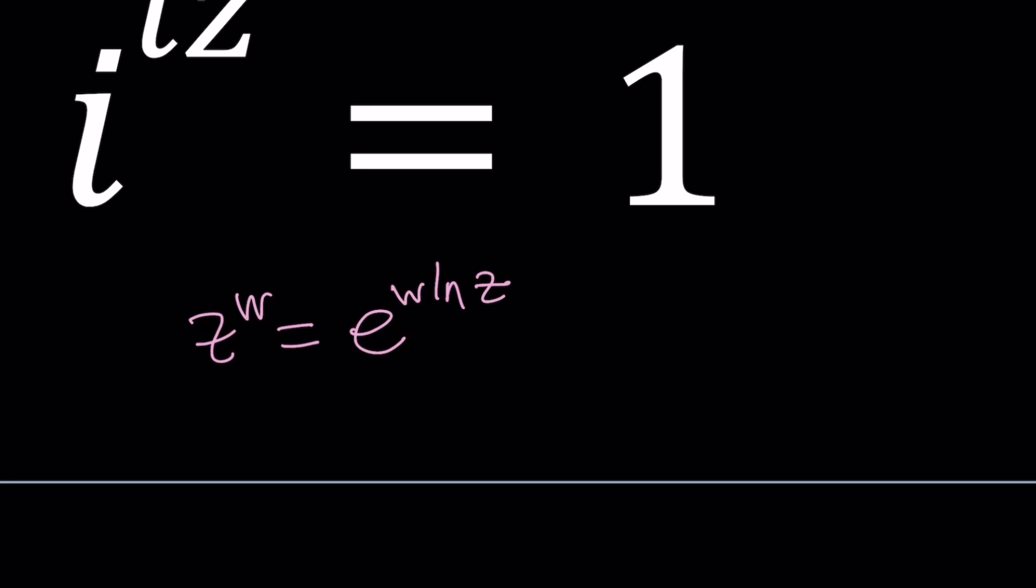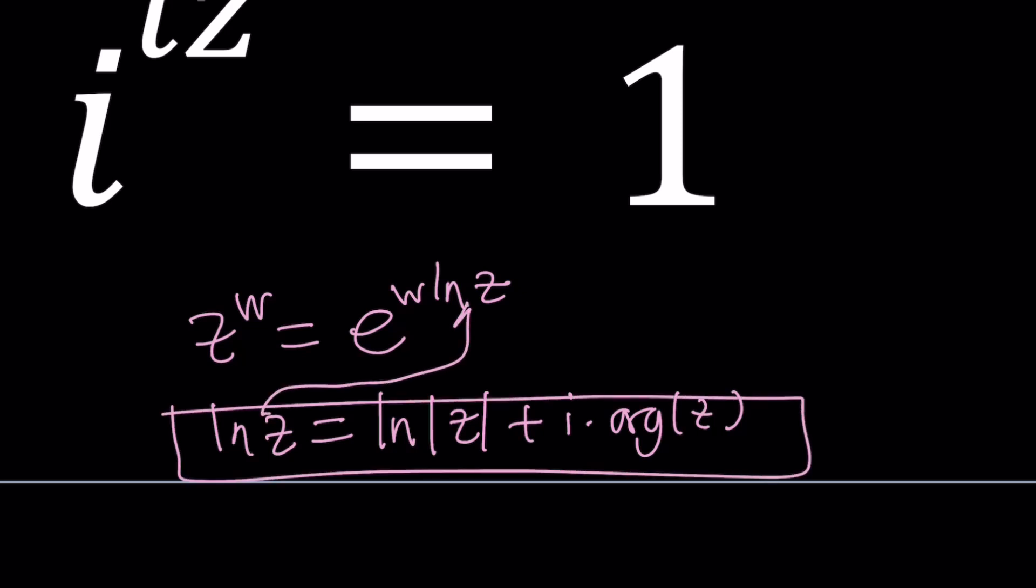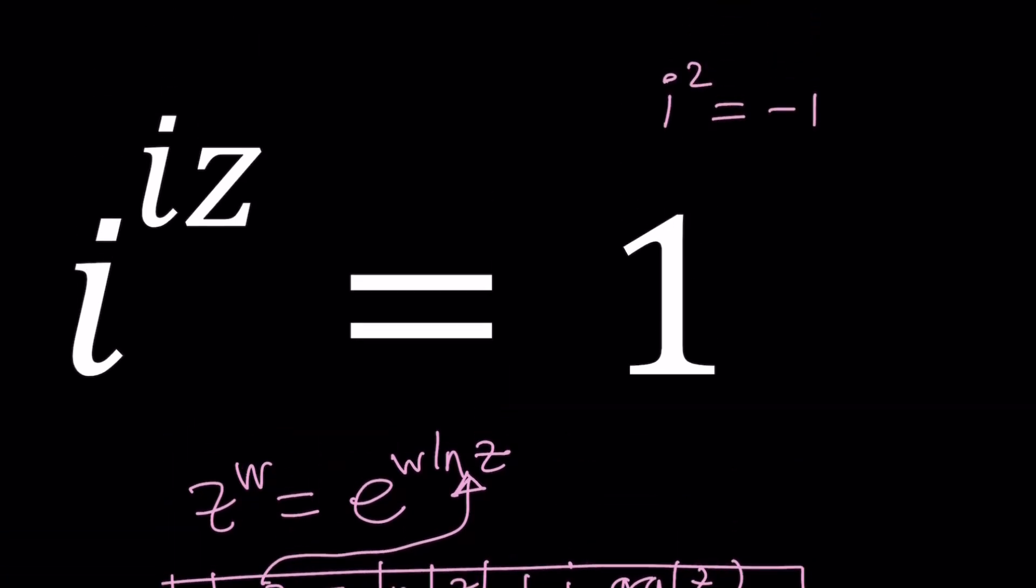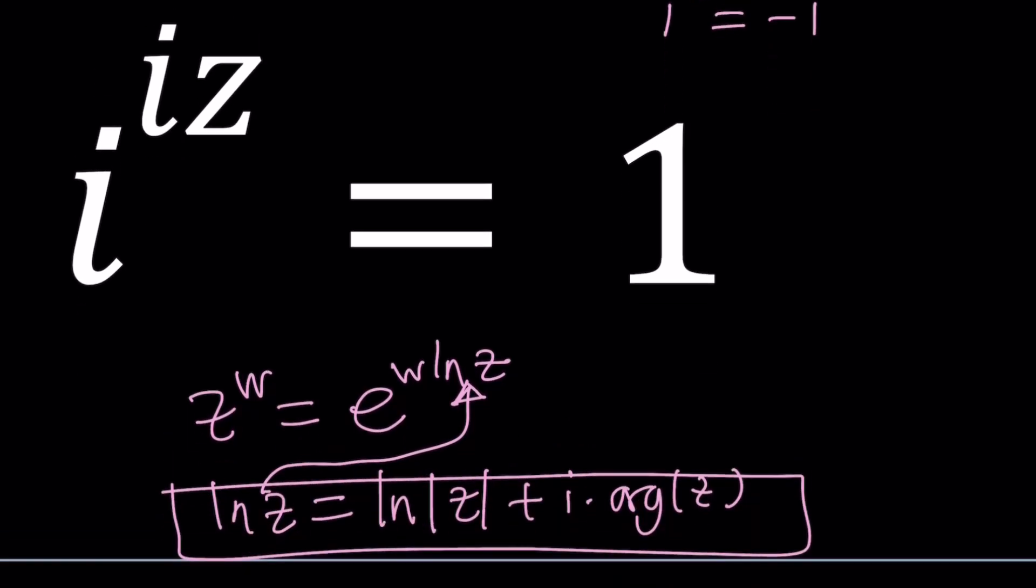What is ln z? ln z is the log or natural log of a complex number which is given as ln absolute value of z plus i times the argument of z. If you plug this in you're going to get what z to the W is when z and W are complex numbers. We have that scenario here because i is a complex number and iz is another complex number.